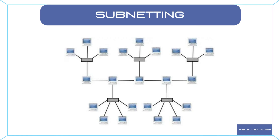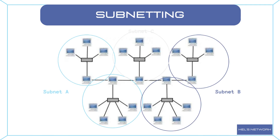Subnetting is a technique used to divide a large IP network into smaller, more manageable subnetworks. It allows organizations to efficiently allocate IP addresses, improve network performance, and enhance security. With subnetting, we can break down a network into smaller subnets, each with its own network ID and host ID. This division enables us to better organize and control our network resources, making it easier to manage and troubleshoot network issues.